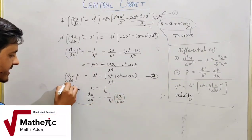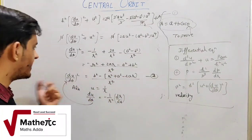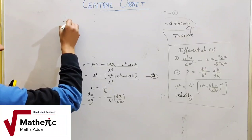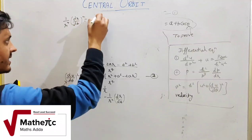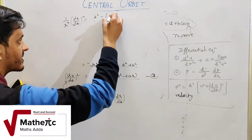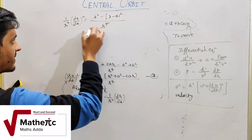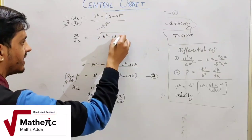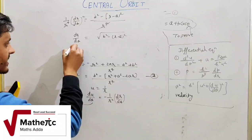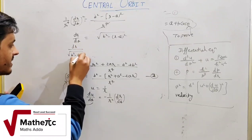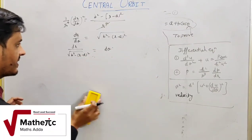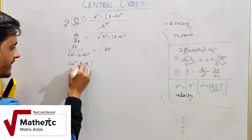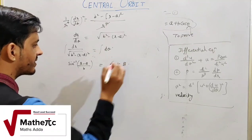Substituting du/dθ = −(1/r²)·dr/dθ into the left side gives (1/r⁴)·(dr/dθ)². The formula becomes: b² − (r − a)² upon r⁴, and r⁴ cancels. So dr/dθ = √[b² − (r − a)²]. Separating variables: dr / √[b² − (r − a)²] = dθ. Integrating gives sin⁻¹[(r − a)/b] = θ + integrating constant B.